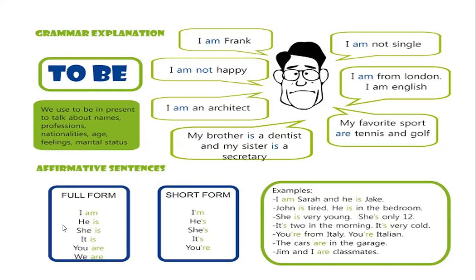Here you see the full affirmative sentences and their short contracted forms. Tenemos la forma corta — la forma contractada con el pronombre sujeto y el verbo to be. I am / I'm. He is / He's. She is / She's. It is / It's. You are / You're. For example: I am Sarah and he is Jake. John is tired — he is in the bedroom. She's very young, she's only 12. It's two in the morning. It's very cold. You are from Italy. You are Italian. The cars are in the garage. Jim and I are classmates.